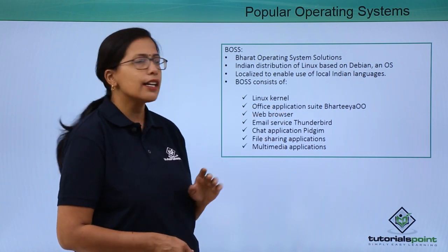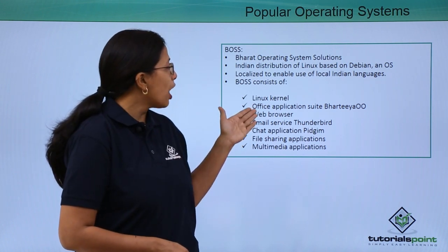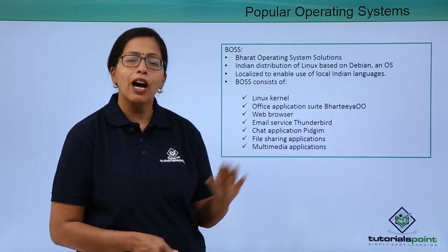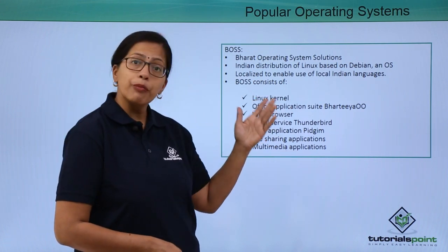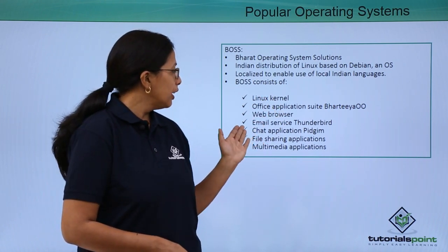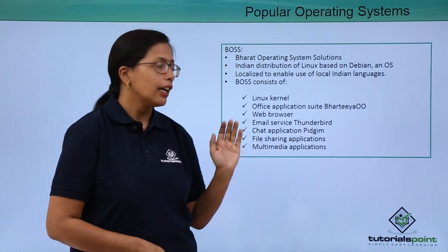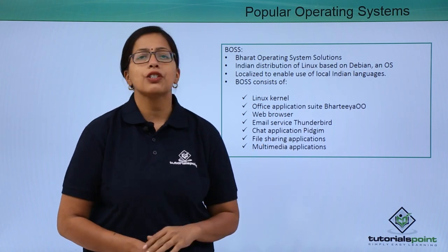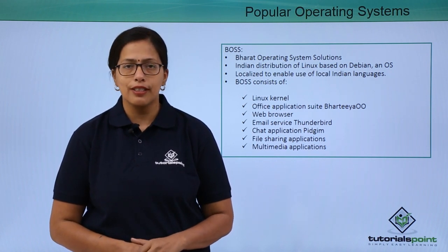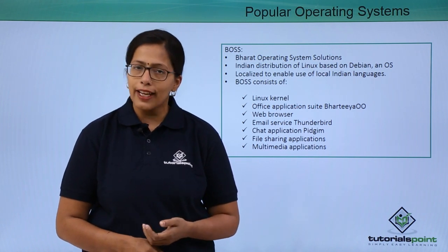Some important features of BOSS: it has a Linux kernel, meaning it is based on Linux. It has the Bharatiya Office Suite application. It has its own web browser, an email service called Thunderbird, a chat application called Pidgin, a file sharing application, and a multimedia application. In this video, we have seen that there are many popular operating systems available to the common user. In the next video, we are going to discuss about the mobile operating systems.